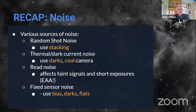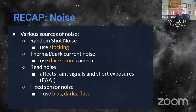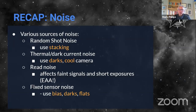Recapping on noise: random shot noise arrives as you're shooting and is what stacking mostly eliminates by averaging. Thermal noise is addressed using darks and by cooling the camera — the heat of the day and heat in the camera all cause noise. Read noise affects faint signals and short exposures; we're using longer exposures now so it's less of an issue but still there. Sensor imperfections are addressed using bias, darks, and flats.